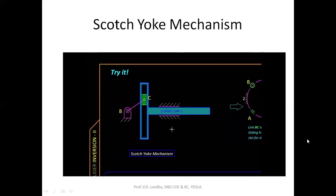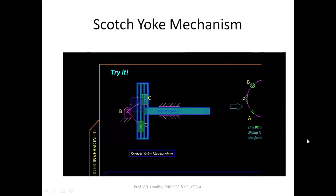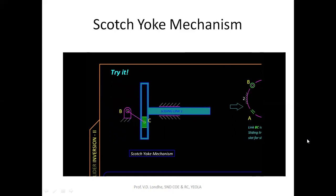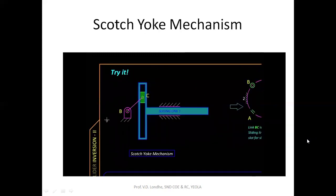Let us see its motion. If we drag on the crank, point C traces a circle, and as it does so, the slot projects its position as the position of the T-shaped link. Since we are taking a projection of circular motion onto one of its diameters, the motion of this slider will be simple harmonic motion, provided the crank is rotating uniformly. This mechanism is called the Scotch-yoke mechanism.